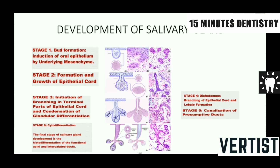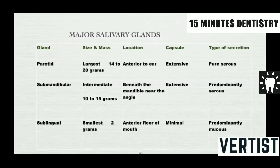In the fourth stage, there is dichotomous branching where the branches of the epithelial cord are uniform, and these branching cords become canalized to form the presumptive ducts. In the final fifth stage, histodifferentiation of the functional acini and intercalated ducts occurs, completing salivary gland development.